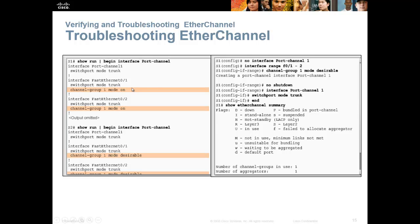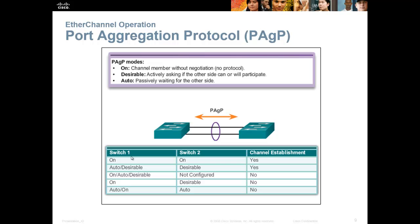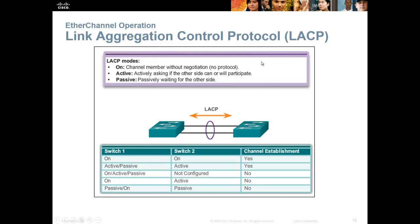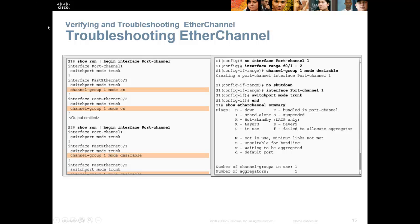For troubleshooting, you need to check the modes on both ends. For example, if one channel is 'on' and the other is 'desirable,' going back to the chart, one's on and one's desirable — it's not going to form. That one is running PAGP. Also, don't forget the pipe command — the key right above the Enter key. You can do show run pipe begin interface port-channel to see just the port channels, or show ip route pipe include interface up to show only operational interfaces. The pipe allows you to filter your results.